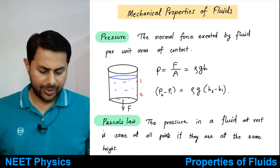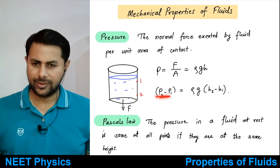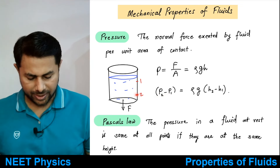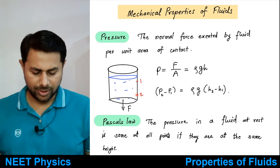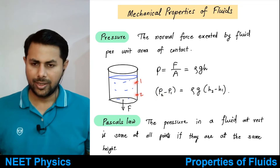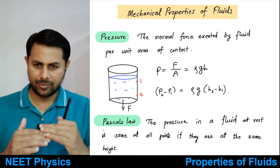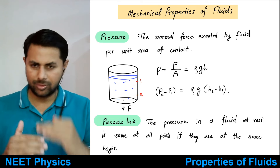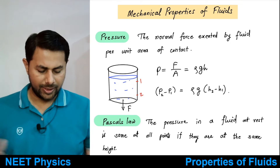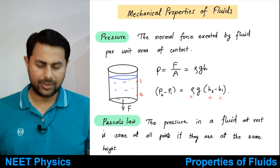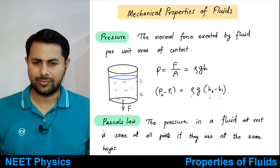If you take two points — let us say this is point 2 and this is point 1 — then the difference in pressure between those two points would be equal to rho g multiplied by h2 minus h1.